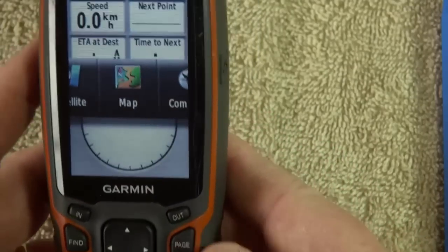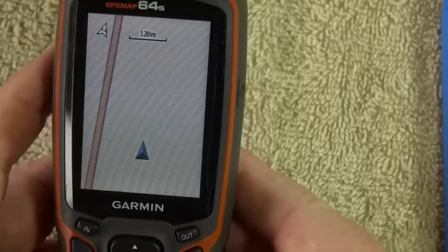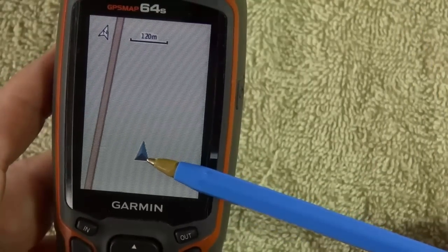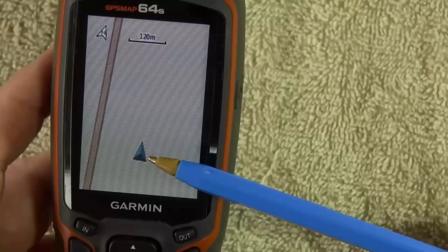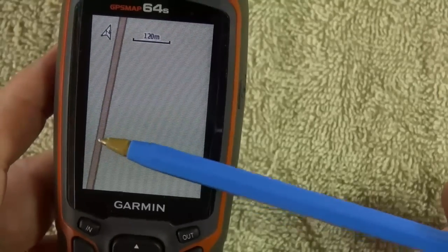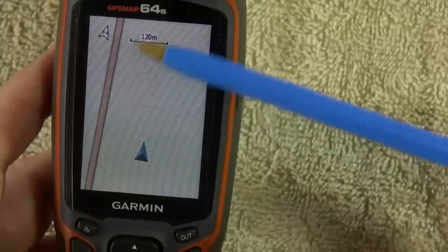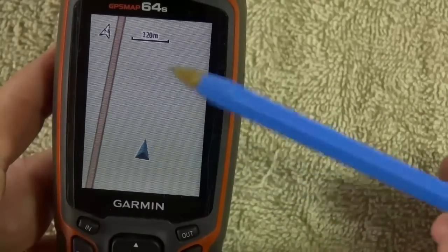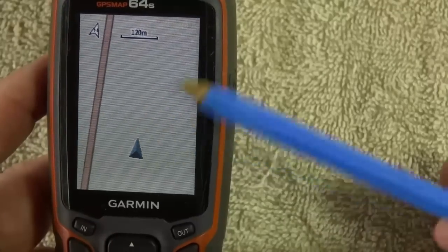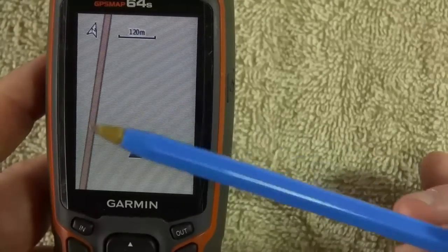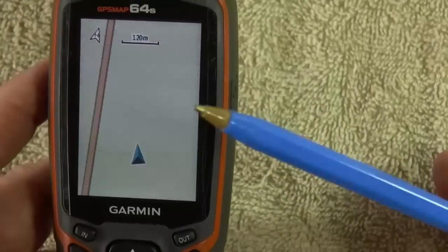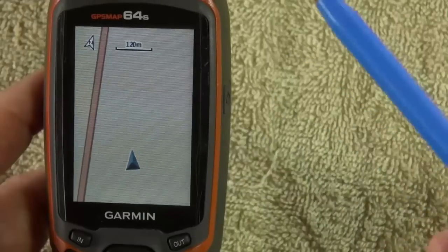The main one you'll use is the map page. Now, that little triangle there represents you, or me in this case. There's actually a road there, but it's a real basic map. You can buy maps for these, so they've got all the topo map. You've got all your creeks and contour lines and all that. I've got that on my old one.